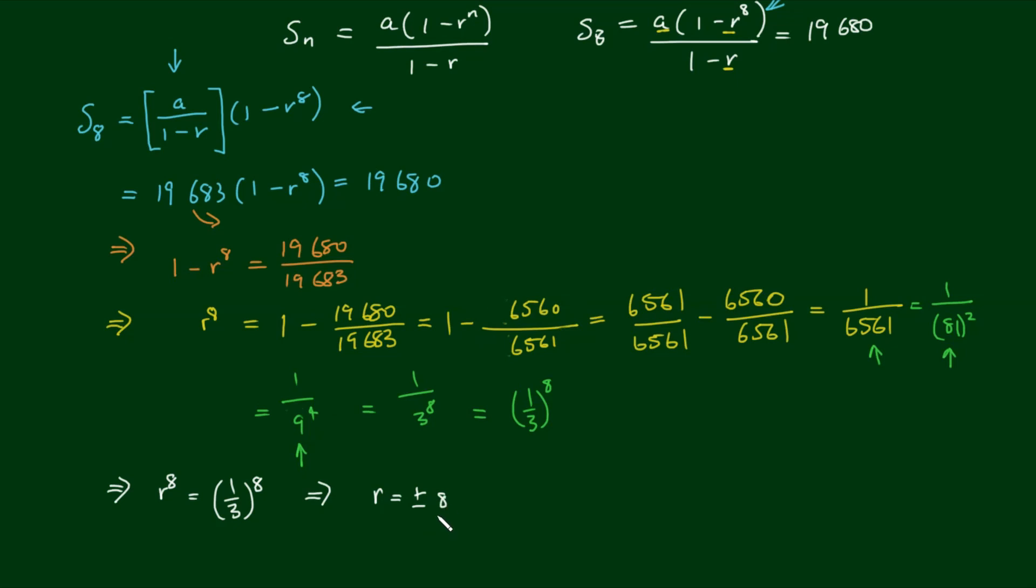There's a positive answer and a negative answer. So if we take the 8th root of 1 third to the power of 8, we get positive or negative 1 third. So r could either equal positive 1 third, or it could equal negative 1 third.